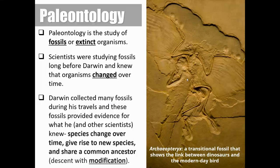Another evidence of evolution is paleontology, which is the study of fossils or extinct organisms. Scientists were studying fossils long before Darwin, and they knew that organisms changed over time. Darwin used the fossils he collected to solidify the idea that organisms change over time. Fossils provided more evidence for Darwin and other scientists to support what they already knew — that species change over time. This gives rise to new species, which we call speciation. All of these living things once shared a common ancestor. This is the idea of descent with modification, which we talked about a few lessons back.